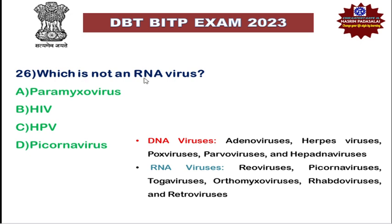Next: which of the following is not an RNA virus? DNA viruses include adenovirus, herpes virus, pox virus, parvovirus, and hepadnavirus. RNA viruses include reovirus, picornavirus, togavirus, orthomyxovirus, rhabdovirus, and retrovirus. Paramyxovirus is an RNA virus, HIV belongs to the retrovirus category which is an RNA virus, and picornavirus is also an RNA virus. Whereas HPV — human papillomavirus — belongs to the DNA virus family.